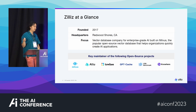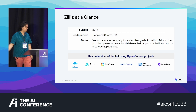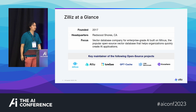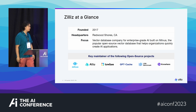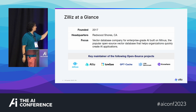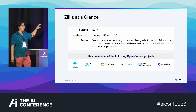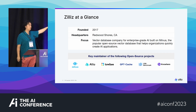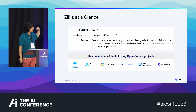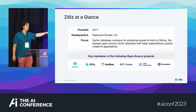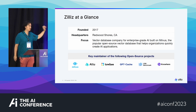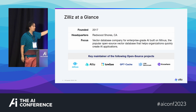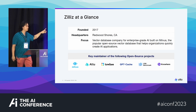A little bit about Zillis. We are based in Redwood Shores, about 20 to 30 minutes south of here — maybe an hour depending on traffic. We were founded in 2017, and we are the key maintainers of many projects. The ones you want to pay the most attention to are Milvus, the open source vector database; GPT Cache, a semantic cache that helps you save a lot of money in production; and VDB Bench, vector database benchmarking. I'll give you a QR code at the end so you can do your own benchmarking.